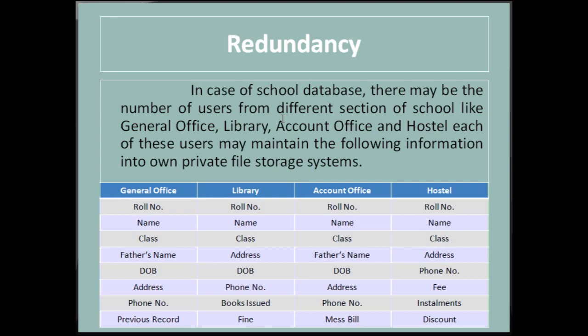In file systems, there is common data about students — such as roll number, name, class, phone number, and address — that must be mentioned in each application. This causes the problem of redundancy, resulting in wastage of storage space and difficulty in maintenance. But in the case of centralized DBMS, the data can be shared by a number of applications, and the whole school can maintain its computerized data with a single database.